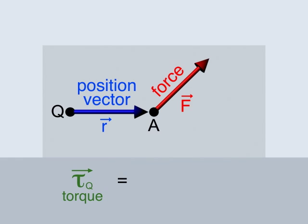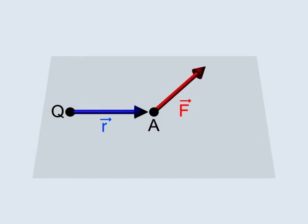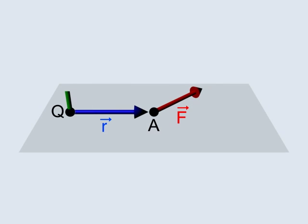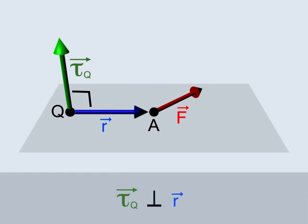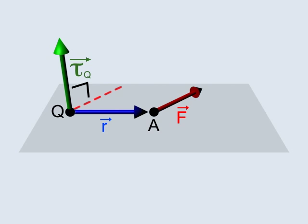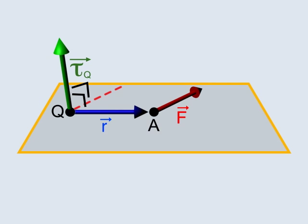The torque about point Q is defined as the vector product of the position vector and the force. The torque is a vector perpendicular to the position vector and is also perpendicular to the force vector. As a result, the torque is a vector perpendicular to the plane defined by R and F.